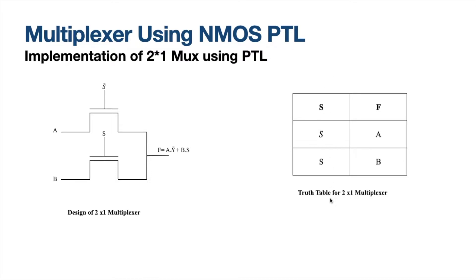Now it is done. We have only two combinations — one with S̄ and the other with S. Whenever there is S̄, we need A. Whenever there is S, we need B. Directly replace it in the figure: when the control signal is S̄, we need A; when the control signal is S, we need B. So F is equal to A·S̄ + B·S, which becomes the final expression of a 2x1 multiplexer.